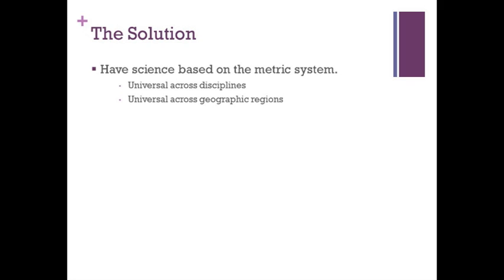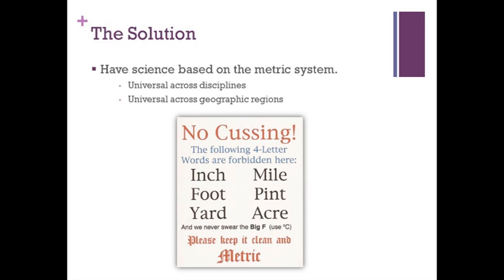But worry no more. There is a solution to this problem. Essentially, the scientists within the US ignore the national system and join the rest of the world in metrics. This allows a universal system between disciplines as well as geographic regions. And even if we were to manage to get the entire country to switch over, we still need to know how to convert between the US system and the metric system to at least transition. So, no using four-letter words like inch, foot, yard, mile, pint, acre. Please keep it clean and metric.